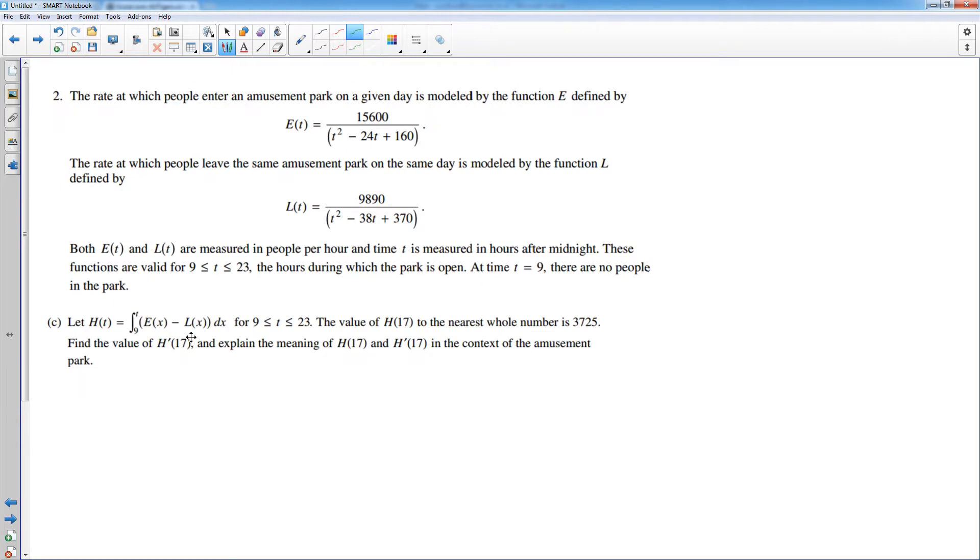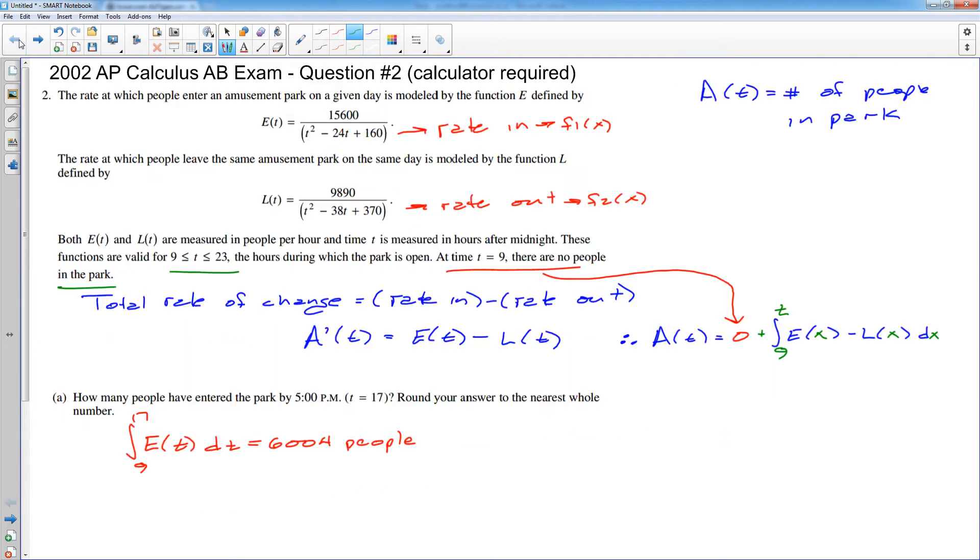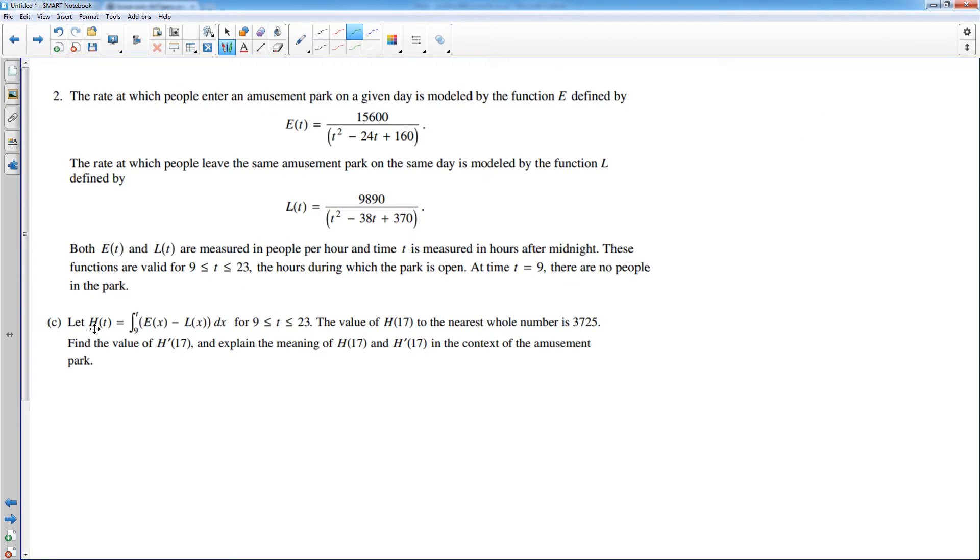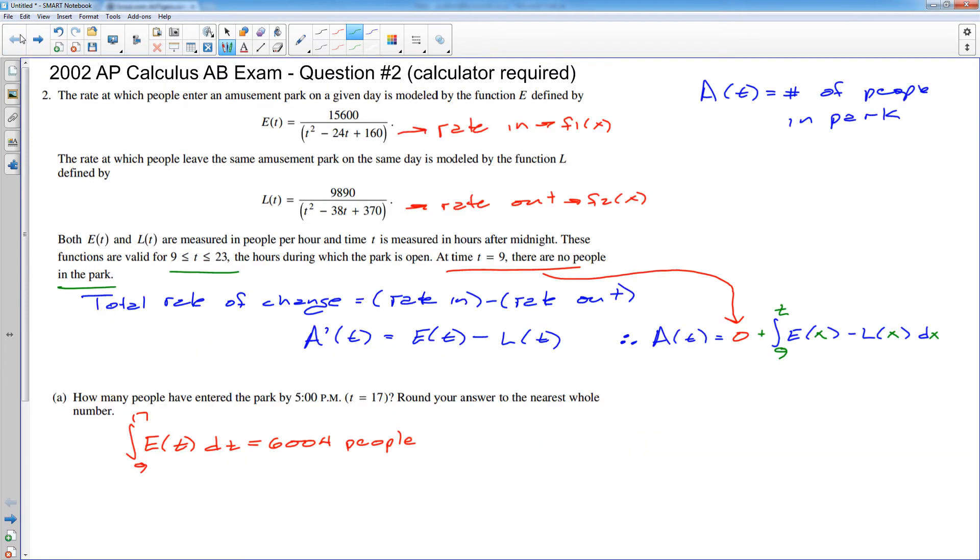Let's see. Moving on to C. And here, C actually gives you the function that I generated at the very beginning. Whenever I see a rate in and a rate out problem, I will go ahead and set up the total rate of change. And this is what I did at the very beginning of the problem. The total rate of change. And then I figured the number of people in the park change at a rate of E minus L. And I generated this function. Now, in part C, they defined the function as actually H of T, not A of T. So maybe I'll go back to my initial work. And I'm going to change this to H of T because that was given to us in part C, which means this is H prime of T.